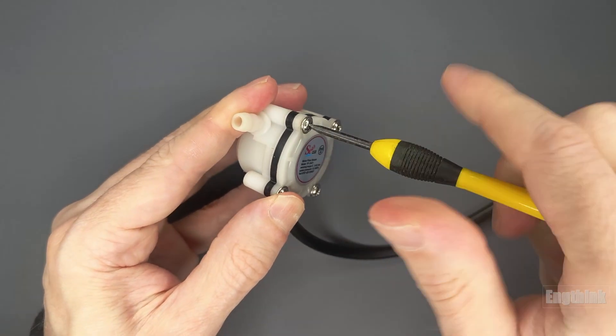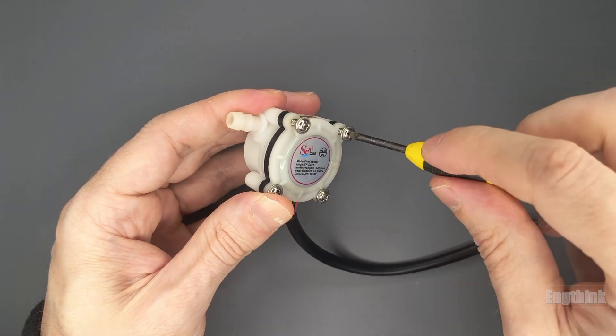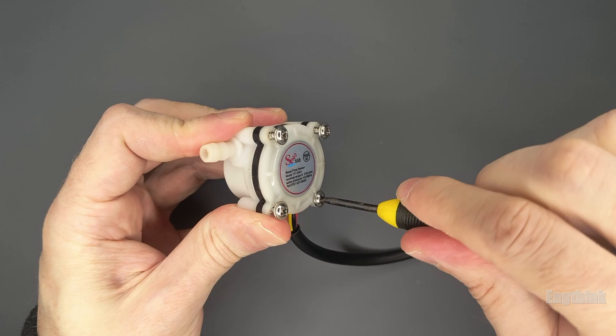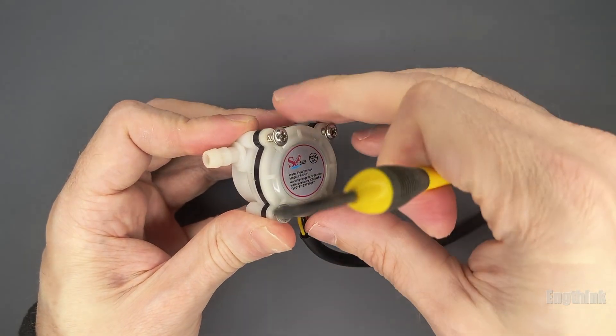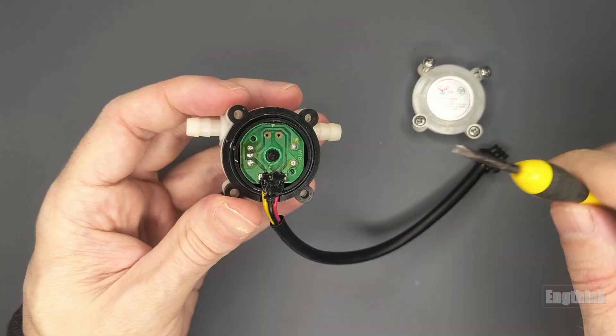But first let's explore inside the sensor to understand how it works. To better understand the working principle, I'll open the sensor. This involves removing the four screws at the top. Once removed, gently lift the top cover.